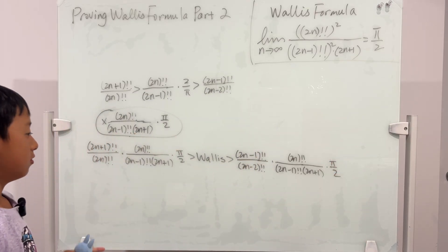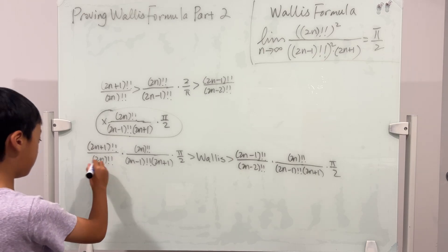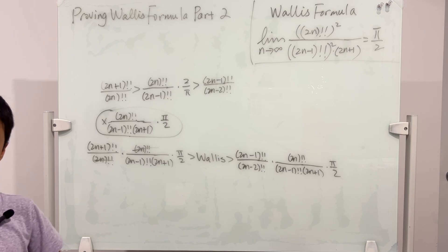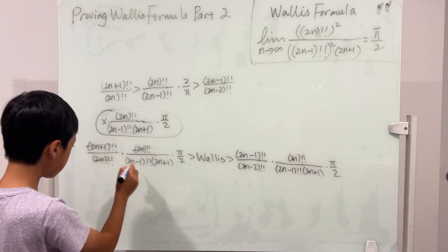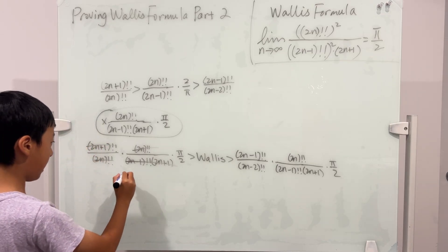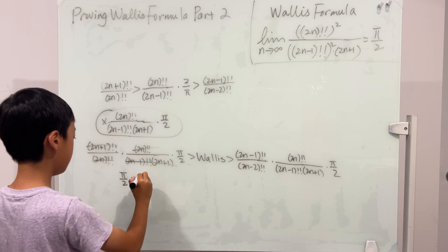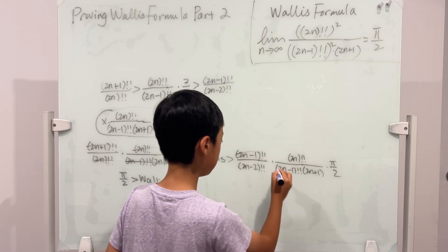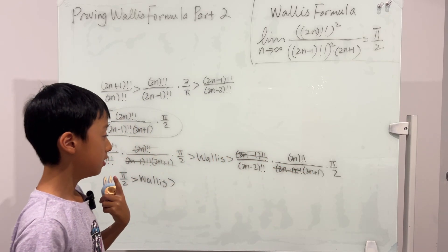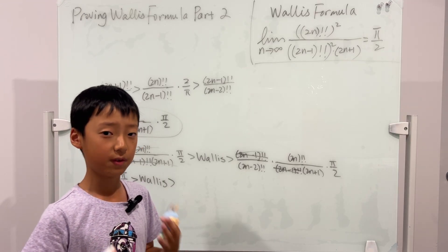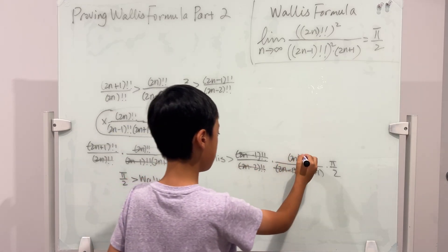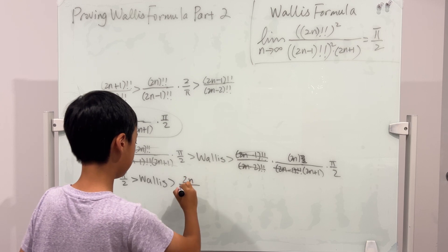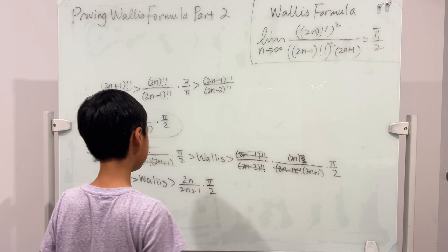Now cancellations begin. On the left side, using 2n+1)!! = (2n+1) · (2n−1)!!, those terms cancel, leaving π/2. On the right side, using (2n)!! = 2n · (2n−2)!!, those terms cancel, leaving 2n/(2n+1) · (π/2).